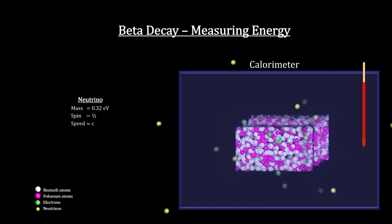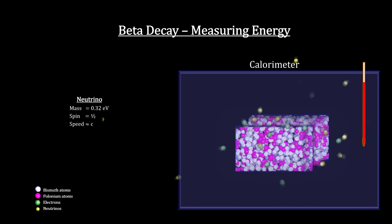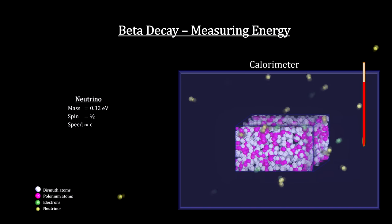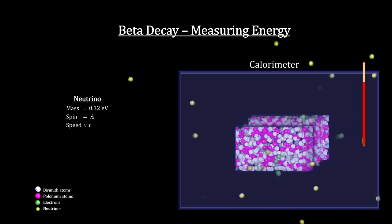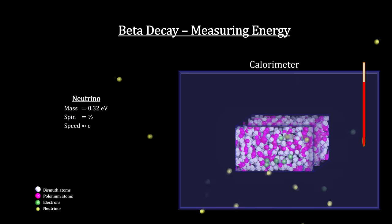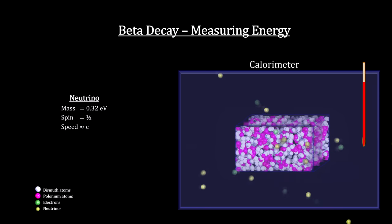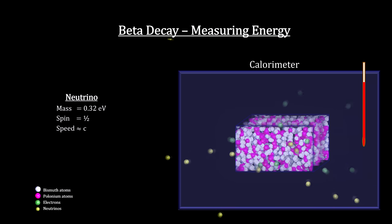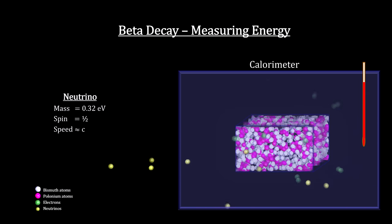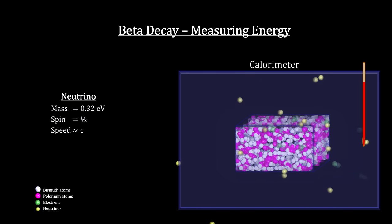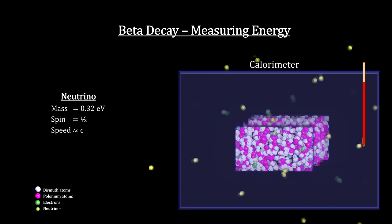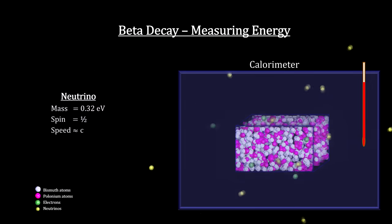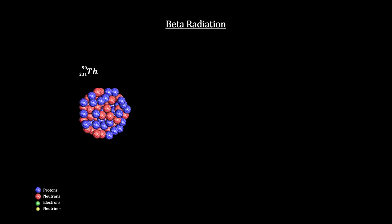In 1931, Enrico Fermi named Pauli's particle the neutrino, meaning a small neutral particle. The neutrino's predicted mass was around a third of an electron volt — over a million times smaller than the electron. Its predicted spin was one-half, and its predicted speed was almost the speed of light. This would have beta radiation look like this, with both an electron and a neutrino being ejected.